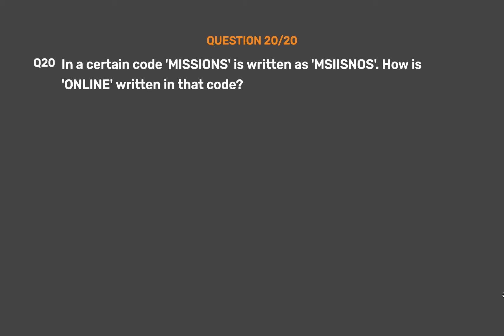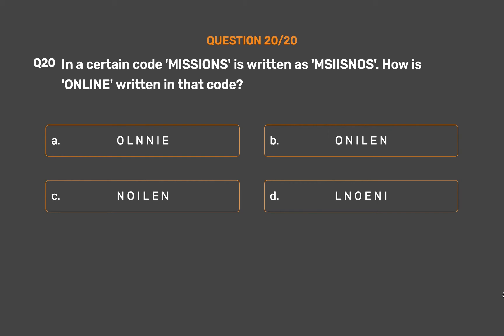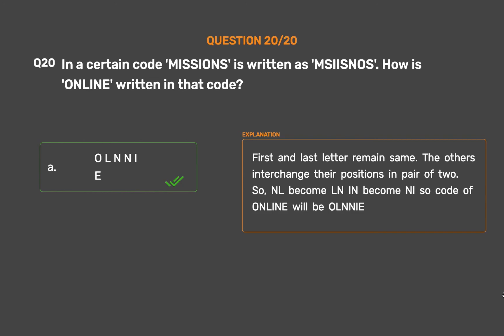Question number 20: In a certain code, 'missions' is written as 'MZIZ'. How is 'online' written in that code? Option A: OLNNIE. Option B: ONILEN. Option C: NOILEN. Option D: LNOENI. The correct answer is Option A: OLNNIE. The first and last letters remain the same; the others interchange their positions in pairs. So 'online': O stays, LN→NL, NI→IN, E stays — giving OLNNIE.